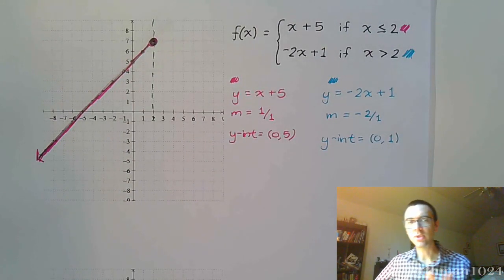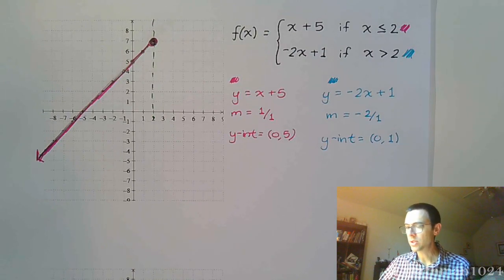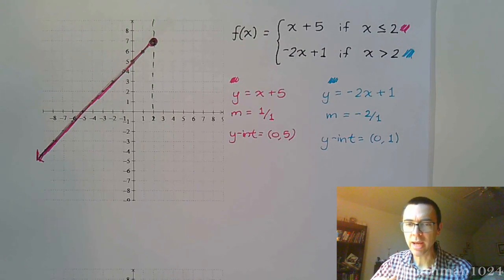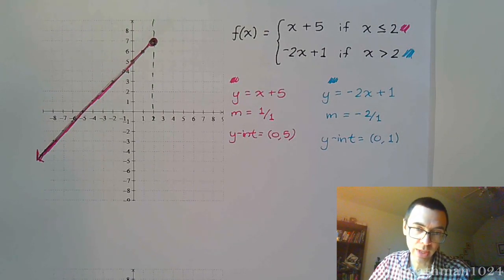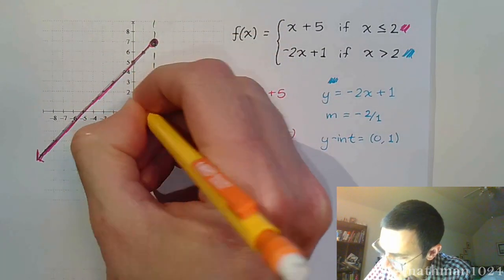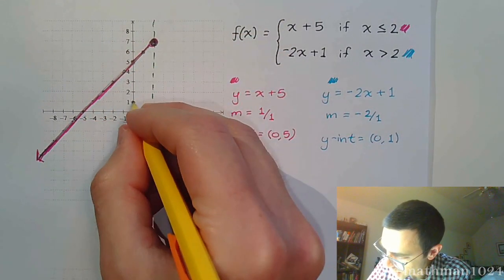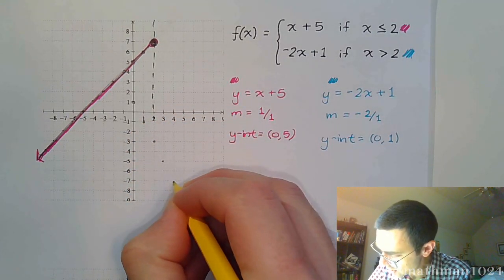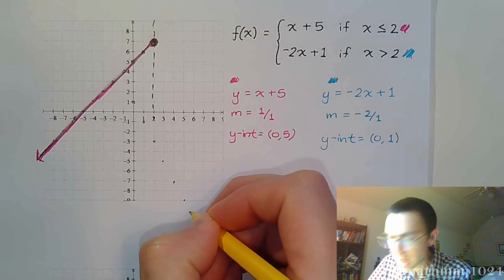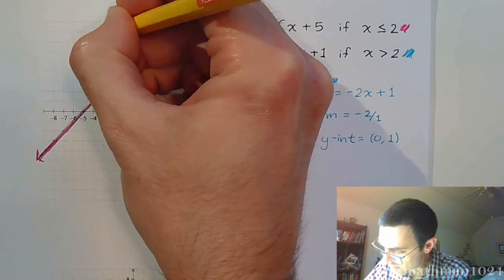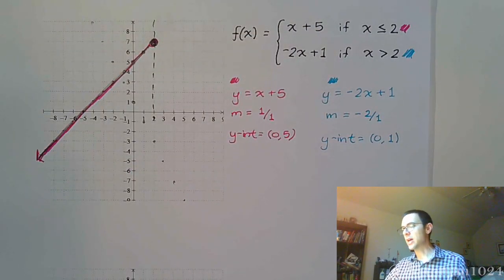Just like we did for the last piece, we want to graph this guy and just graph it in its entirety. Then we're going to come back and start cutting the pieces that we don't need and don't want. We start here at (0, 1). Using the slope of negative 2 over 1, we're going to go down 2 over 1, just like this. Then we need to reverse that and go up and to the left.